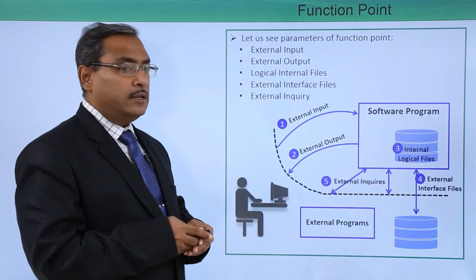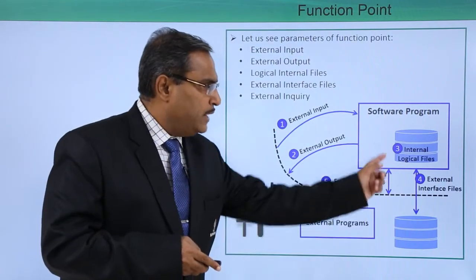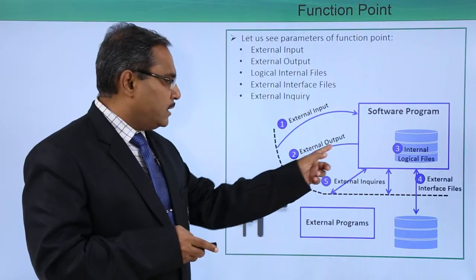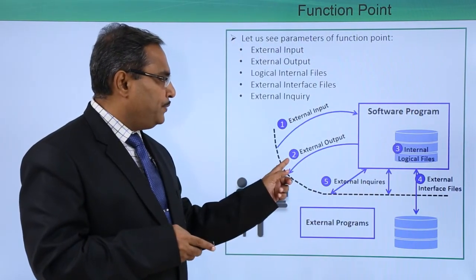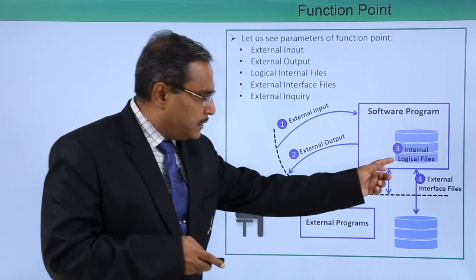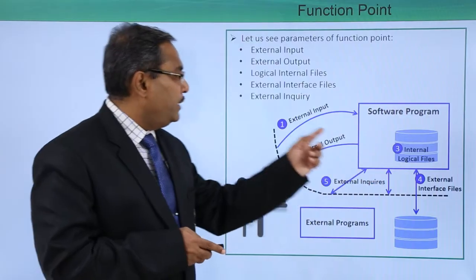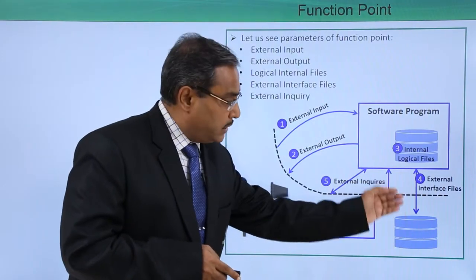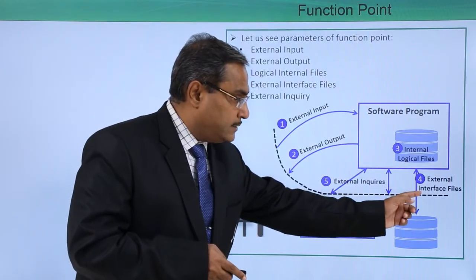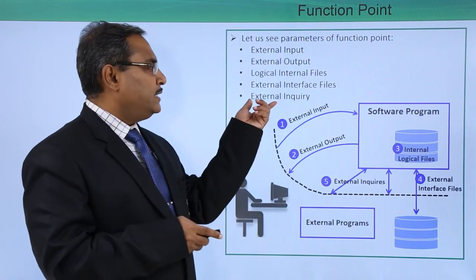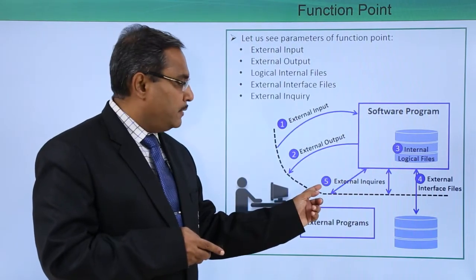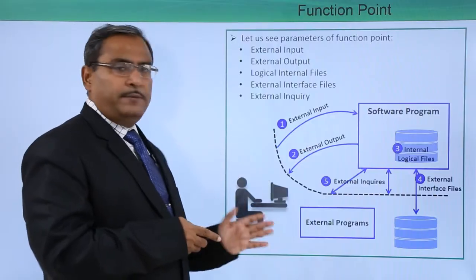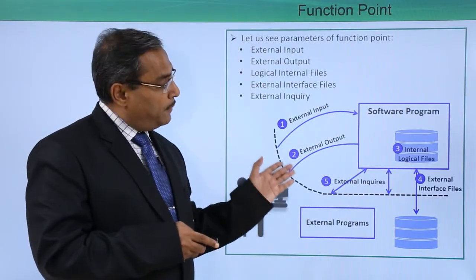The first parameter is external input. This is the system boundary, this is the software program, and this is point number 1 — external input. Next is external output, which will come out from the software program — point number 2. Next we have logical internal files — point number 3. Then external interface files — point number 4, which resides outside of the process boundary. The last one is external inquiry — point number 5, where external programs interact with the software being developed.